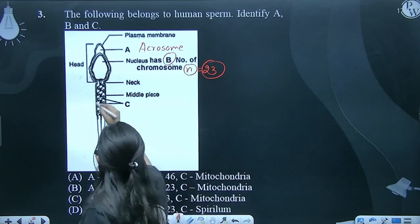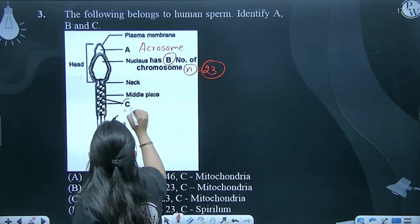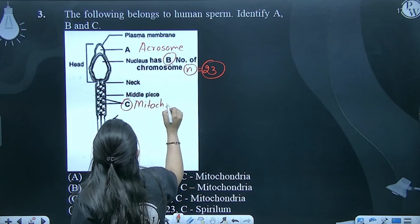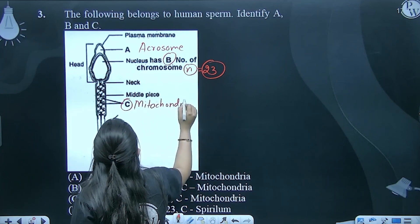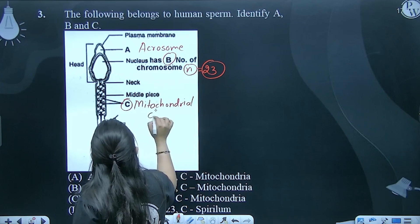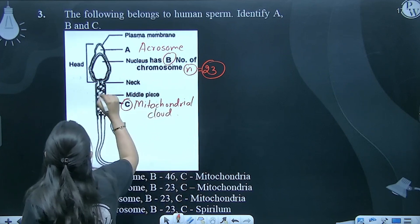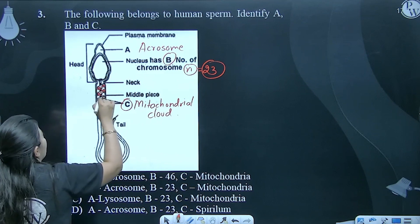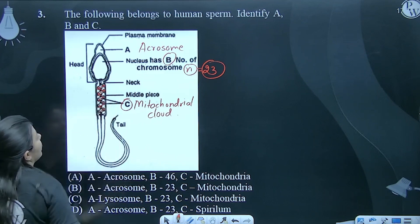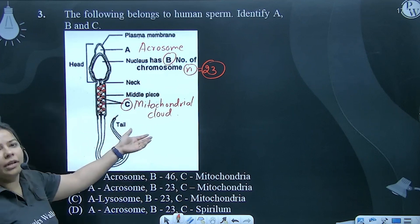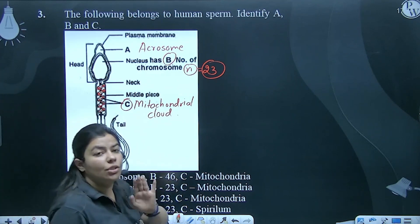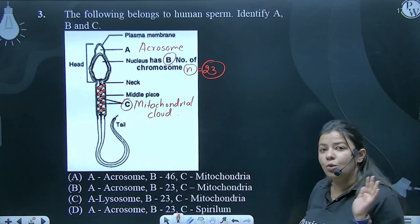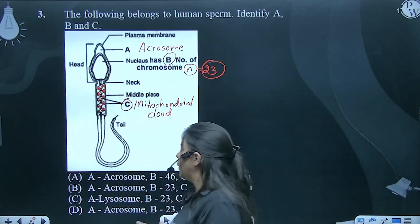Uske baad mein C joh hai — yhe middle piece hai, that contains mitochondrial cloud. Mitochondria present hai yahan par, aur yhe zigzag pattern mein hota hai. Isse hum kya bolte hai? Mitochondrial cloud — yhe major energy source sperm ka, so that it can survive and it can swim through the female reproductive tract.